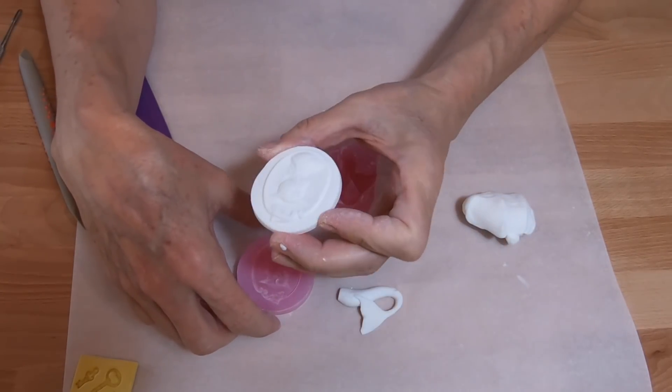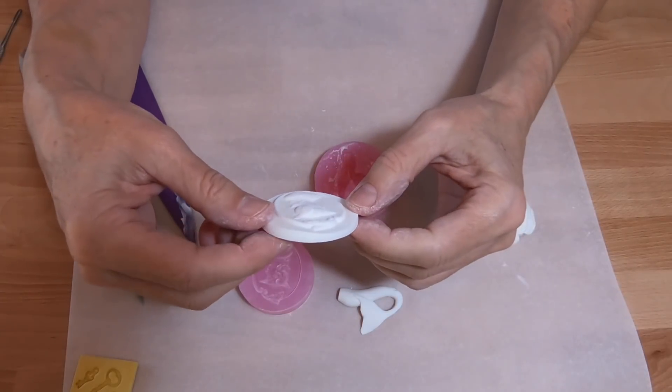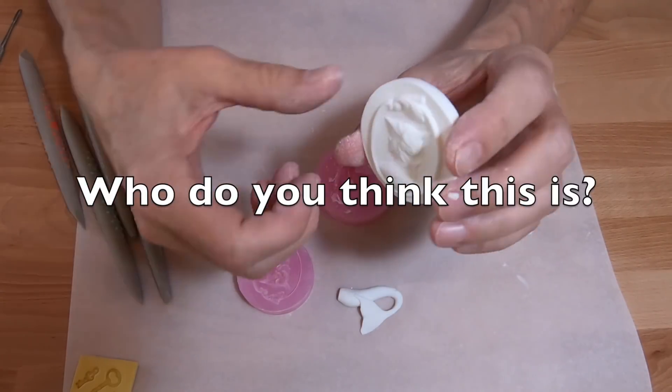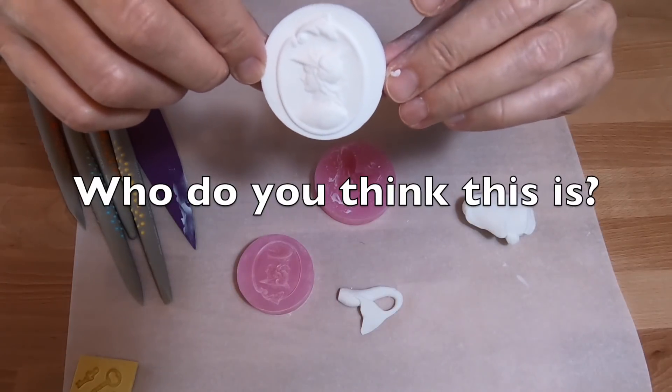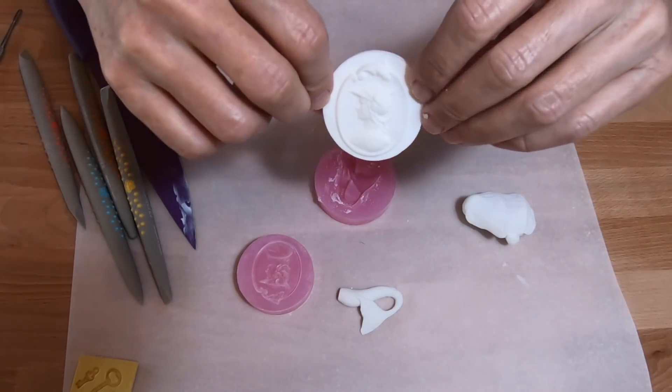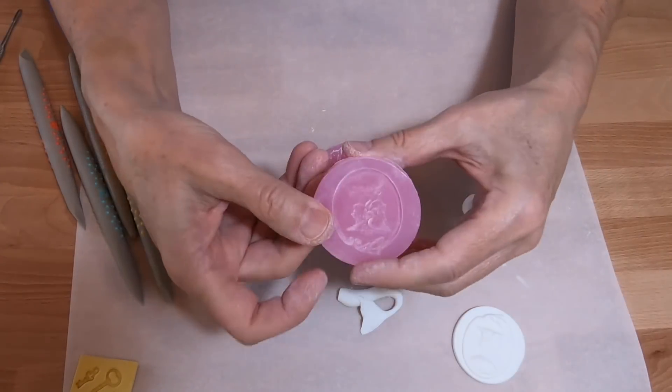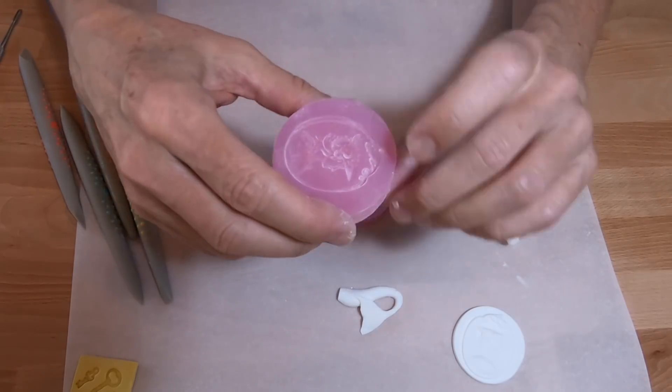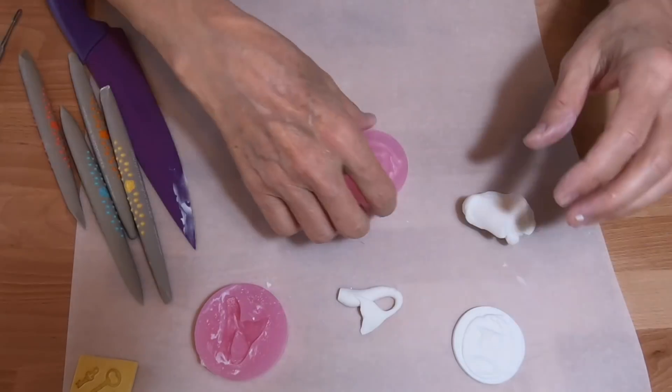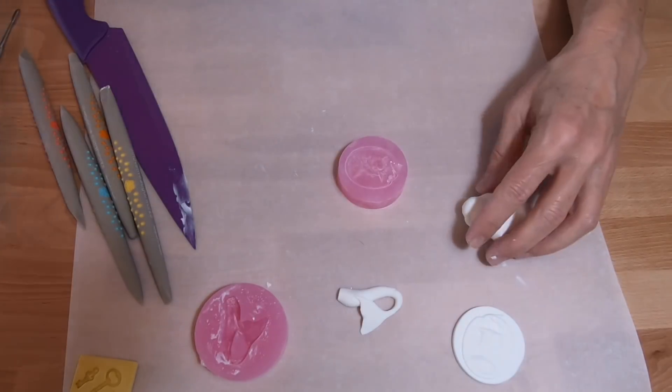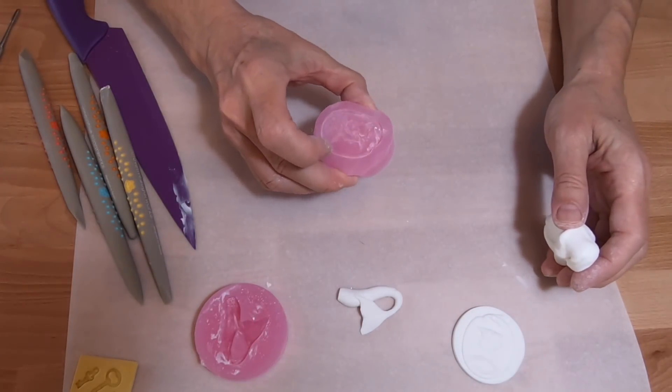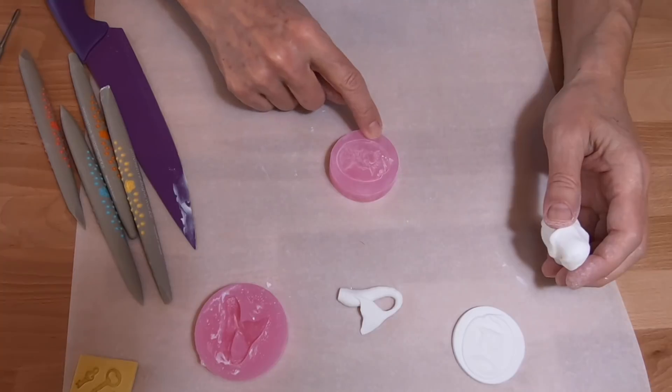The reason it's difficult is because this is bendy. In a mold like this one's perfect because of all the details, you want to be able to open it up so that it pops out. But in a mold like this, a firmer mold would be ideal, but I'm at the whim of the mold makers.